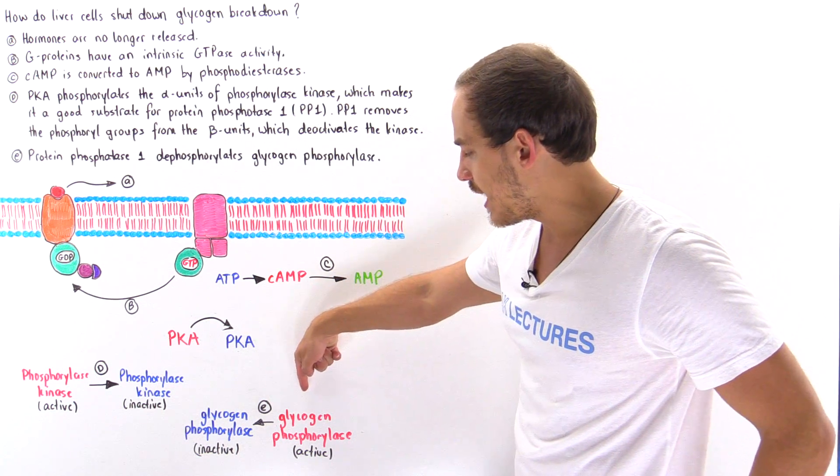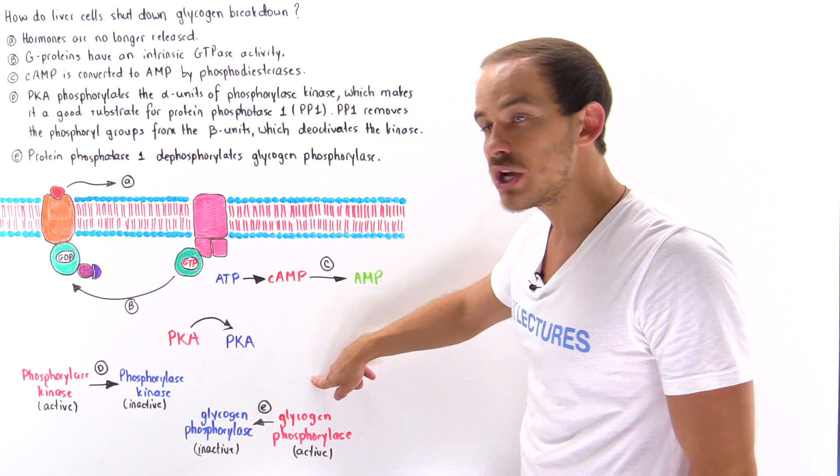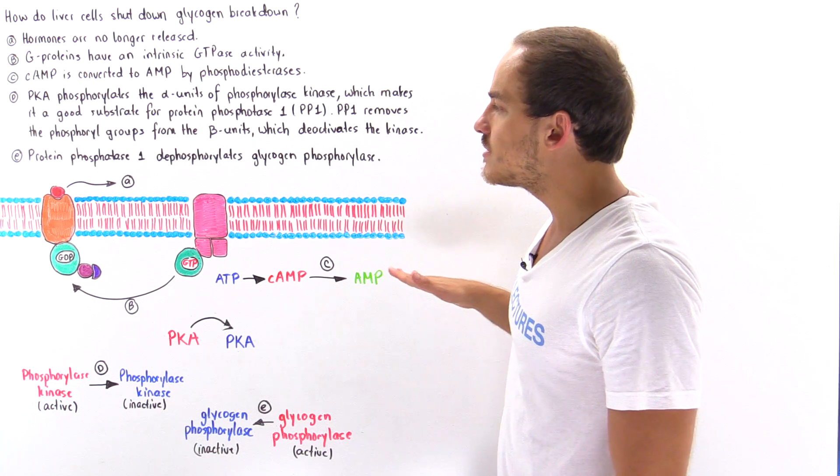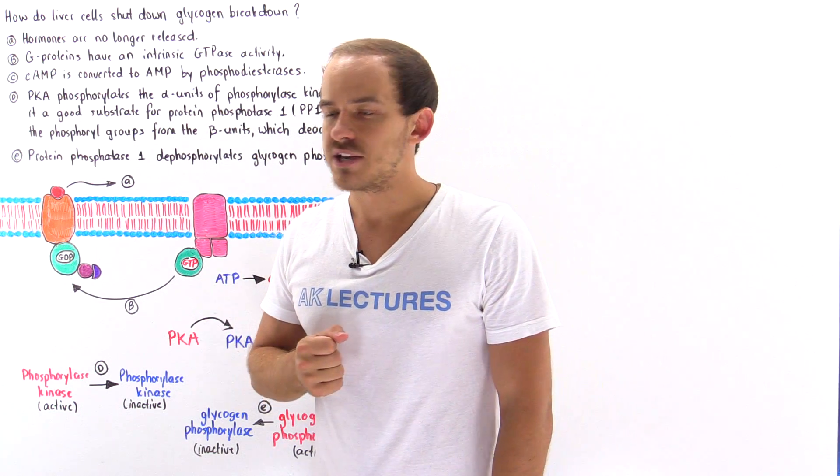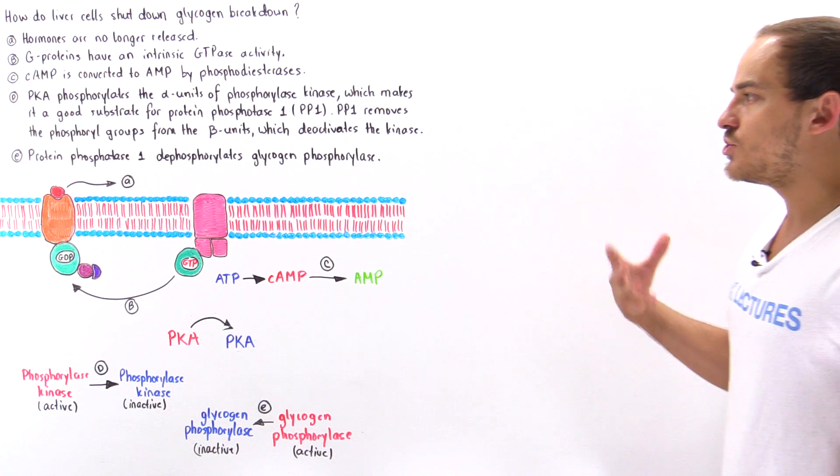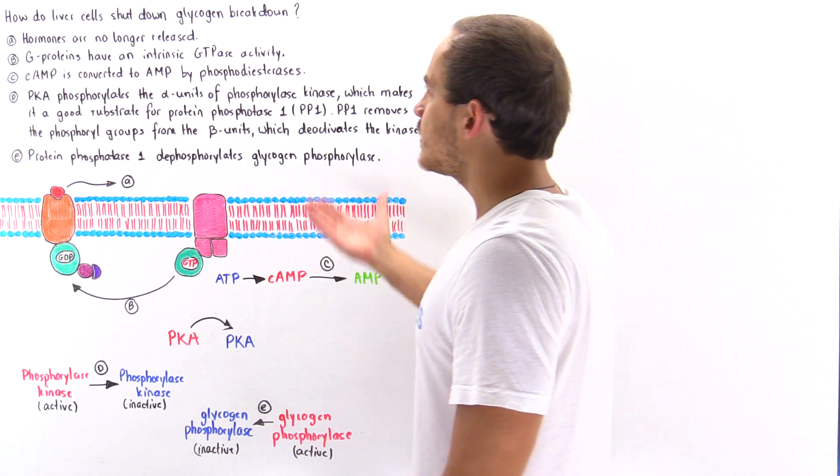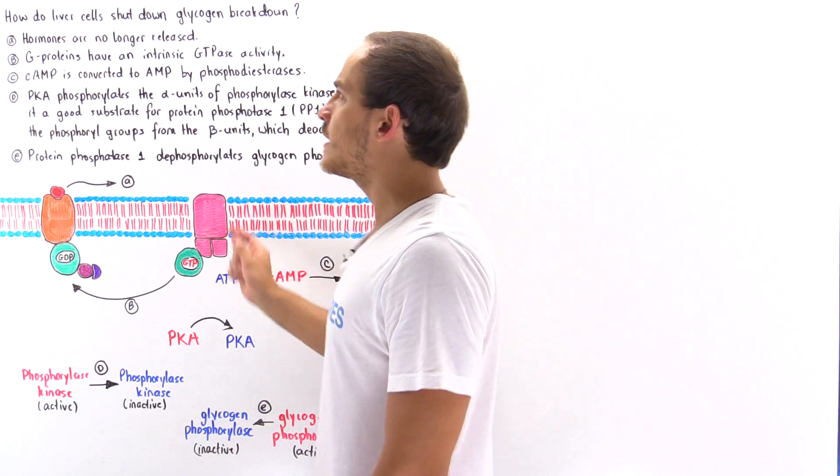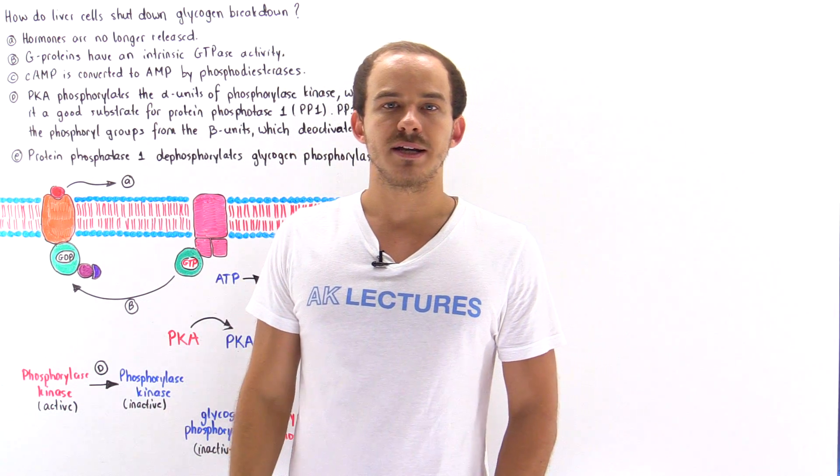Once we deactivate the glycogen phosphorylase, the glycogen breakdown process can no longer take place. So this is basically how our liver cells and generally our body shut down and terminate glycogen breakdown in the liver cells of our body.